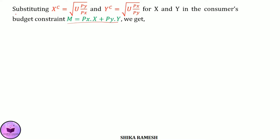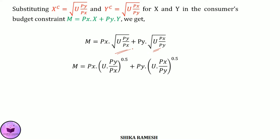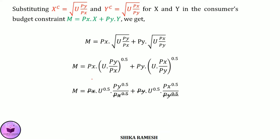Substituting into the budget constraint, M equals Px multiplied by x plus Py multiplied by y. Substituting the Hicksian demands, M equals Px multiplied by the square root of U times Py over Px, plus Py multiplied by the square root of U times Px over Py. Expanding gives M equal to Px times U raised to 0.5 times Py raised to 0.5 divided by Px raised to 0.5, plus Py times U raised to 0.5 times Px raised to 0.5 divided by Py raised to 0.5.